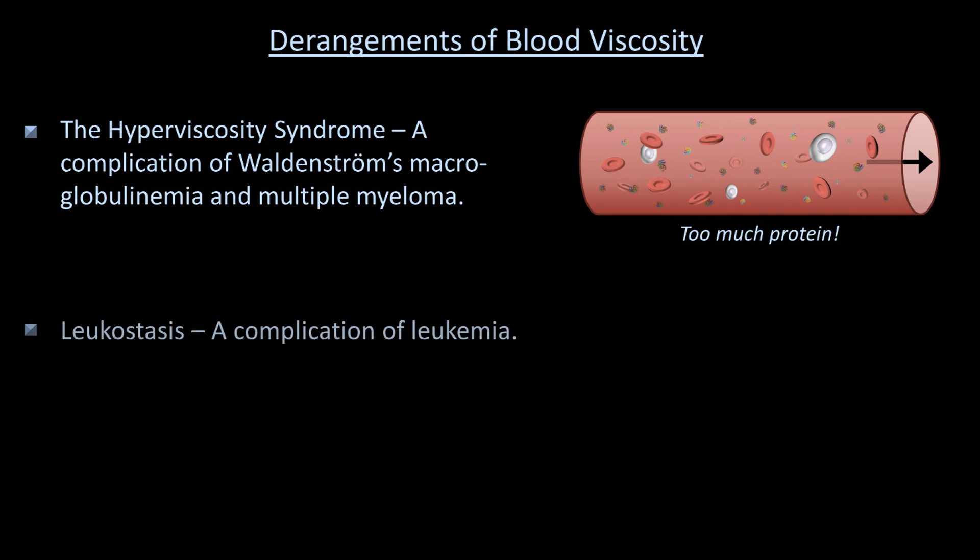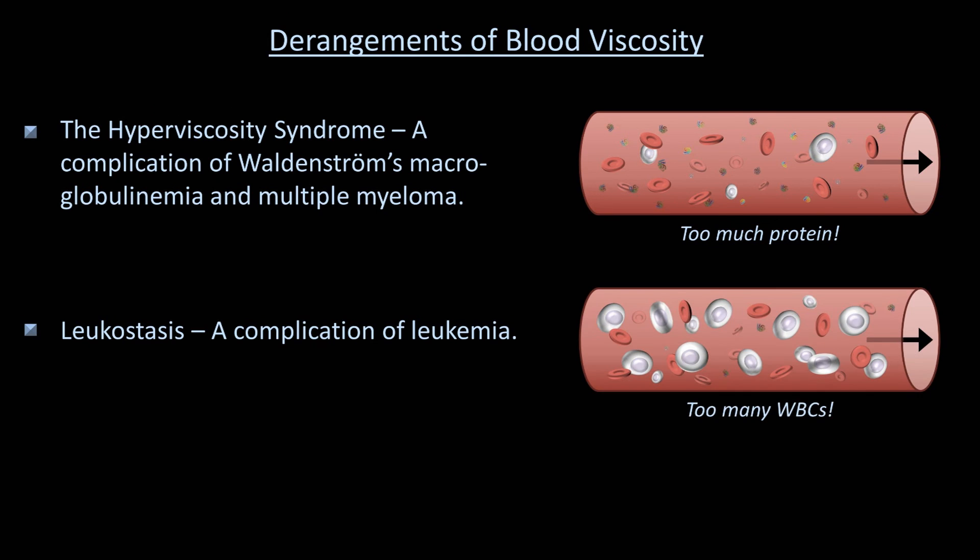The second major subtype is leukostasis, which is a complication of leukemia, in which there are just too many white blood cells. The absolute number of white blood cells isn't the only important value here, but also how sticky those cells are, which explains why a patient with chronic leukemia can have no symptoms of hyperviscosity at a white blood cell count of 200,000, but a patient with acute leukemia can have severe symptoms at a white cell count of 100,000. The best treatment here is immediate chemotherapy.